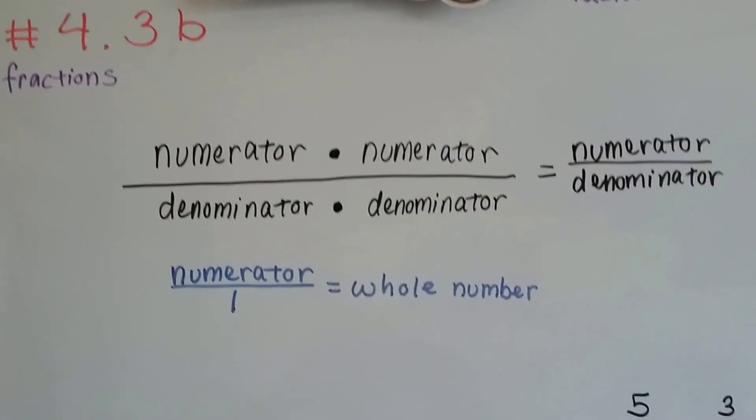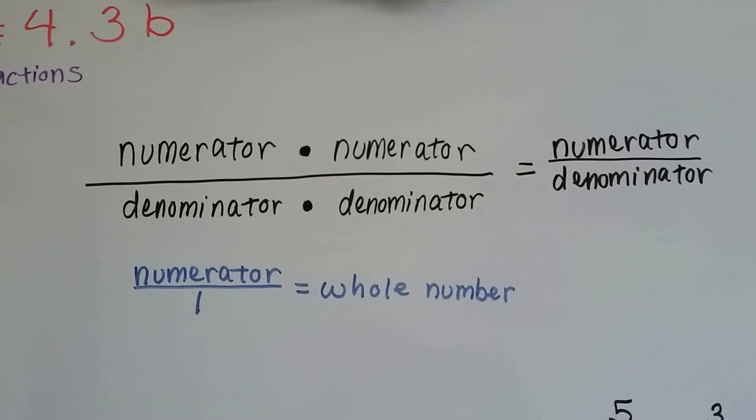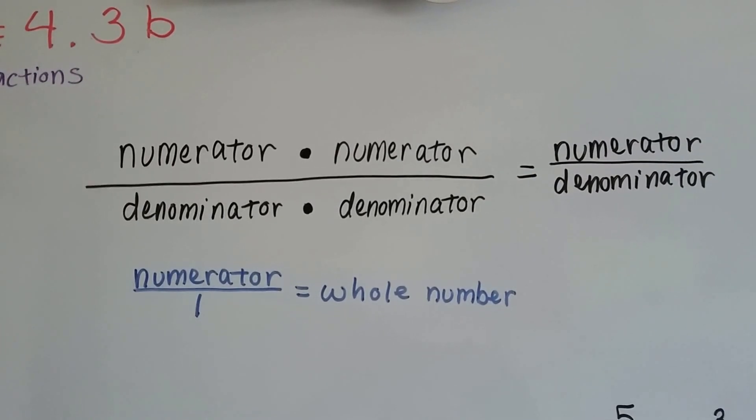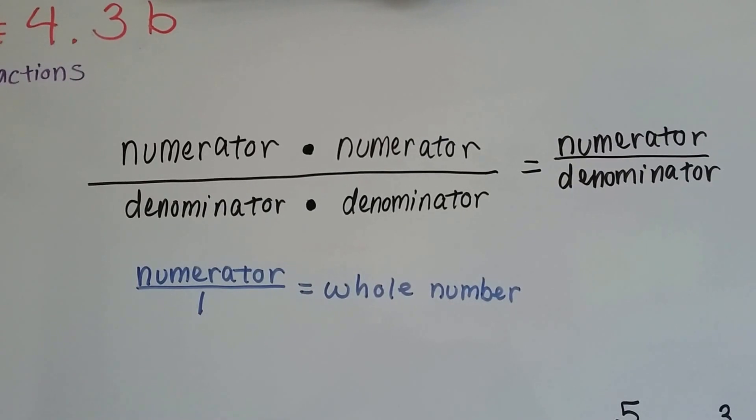We talked about in the previous video how we multiply a numerator by a numerator and a denominator by a denominator to multiply fractions. If we have a whole number, we can just put it over a 1 and turn it into a fraction, then we can multiply with it.